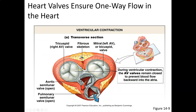AV valves are sometimes called parachute valves — they have papillary muscles and chordae tendineae that help prevent backflow. Semilunar valves are named for their half-moon shape; when ventricular pressure drops to zero, little pockets fill with backflowing blood and close off the chamber, preventing backward flow. From a top-view cross-section, the tricuspid has three cusps, the bicuspid has two, and both semilunar valves have three cusps each. All valves except the mitral have three cusps. Interestingly, a two-cusp valve is actually more resilient than a three-cusp valve from a physical standpoint.